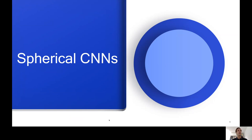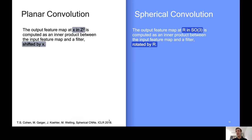Spherical CNNs. The idea of spherical CNNs can easily be understood by analogy to planar CNNs. A planar convolution can be understood as follows. We say that the output feature map at a certain position X in Z2, that's the integer coordinate, is computed as an inner product between the input feature map and a filter that was shifted by X. So X plays the role of positions, but also of translations. By analogy, a spherical convolution, we just swap out the symmetry group of translations for three-dimensional rotations. We say that the output feature map at a certain rotation R in the group of rotations called SO3 is computed as an inner product between the input feature map and a filter rotated by R.